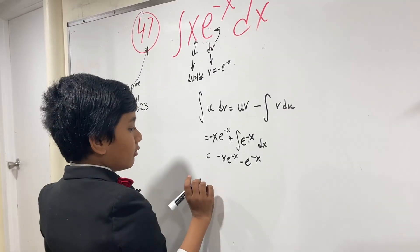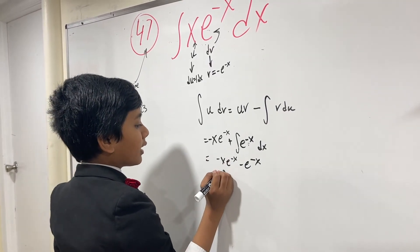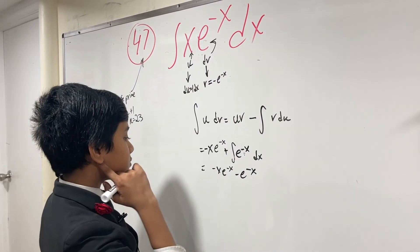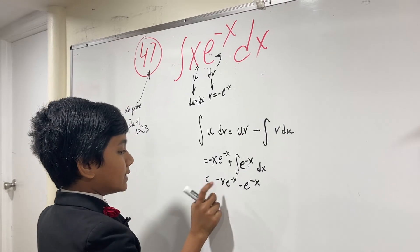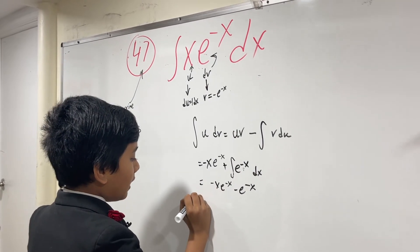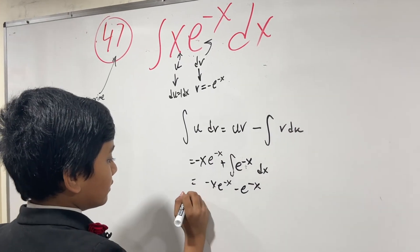We take the derivative using the product rule, which is like the counterpart of integration by parts. For -x*e^(-x), we have the derivative of the first times the second, plus the derivative of the second times the first.